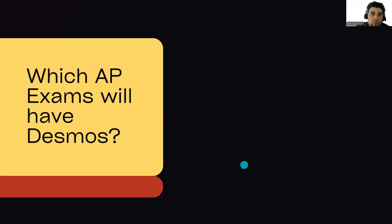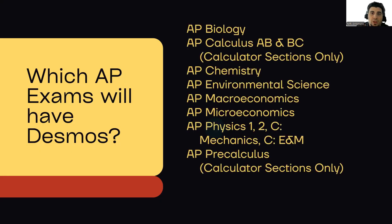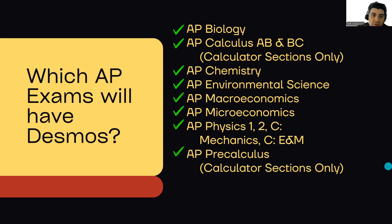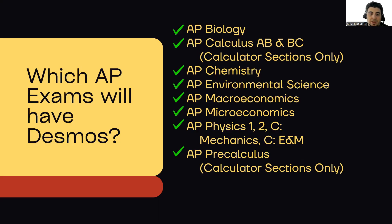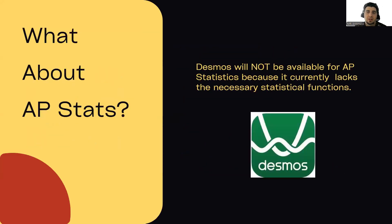One question that comes up is which exams will have Desmos. All 12 of them are listed here: AP Bio, AP Calc (both of them), AP Chem, AP Environmental Science, Macro, Micro, Physics, as well as Pre-Calculus. For Calc and Pre-Calc, it's the calculator-only allowed sections that will have the Desmos calculator available.